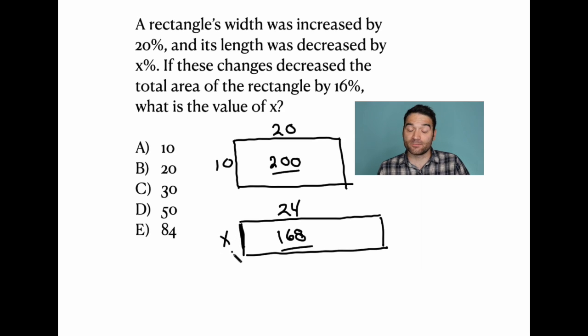Of course, I don't know what the length is, but I can figure that out. If the width is 24 and the length is x, then I just set up this very easy equation. 24 times x equals 168. And I figure out that x equals 7. So by what percent did we decrease to go from 10 to 7?